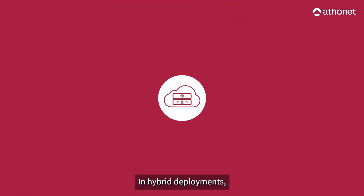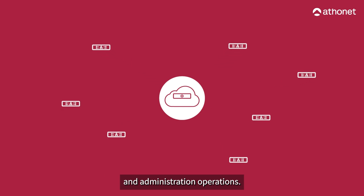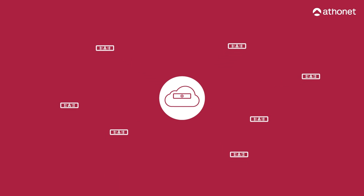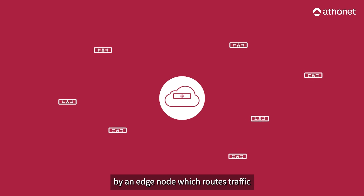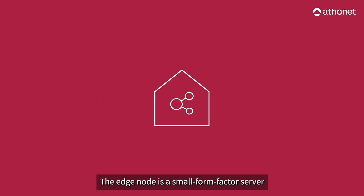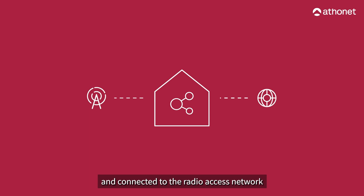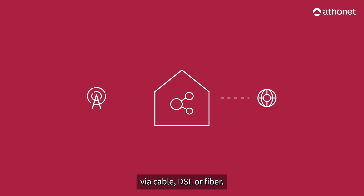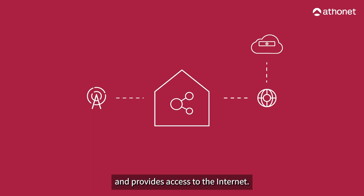In hybrid deployments, the solution uses cloud computing to run all the control plane procedures and administration operations. The user plane is handled on-premise by an edge node which routes traffic to local applications as well as to the global internet. The edge node is a small form factor server installed on-premise and connected to the radio access network in a broadband data network via cable, DSL, or fiber. This establishes the connections to the on-cloud control plane of the 5G core network and provides access to the internet.